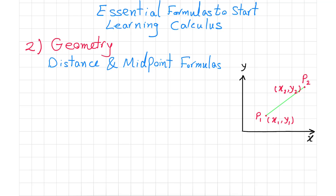In the past videos I talked about area, circumference, and volume of 2D and 3D geometric shapes — how to obtain the area, circumference, and volume of shapes like the circle, triangle, sphere, prism, and cone. In this video I'm going to talk about lines, the equation of a line, and the equation of a circle.